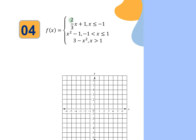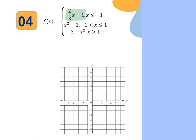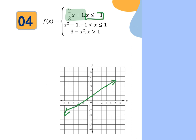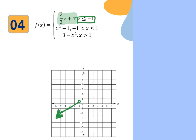Example 4 has three parts. The first piece is a line with y-intercept 1 and slope two thirds — up 2 to the right 3, or down 2 to the left 3. We only want it where x is less than or equal to negative 1, so start with a solid dot at the boundary and point the line to the left. That's the first part of this piecewise function.